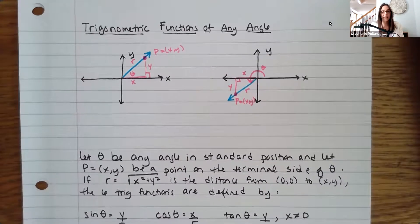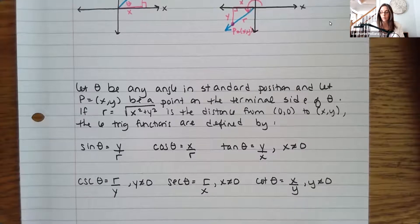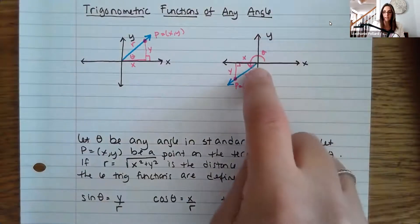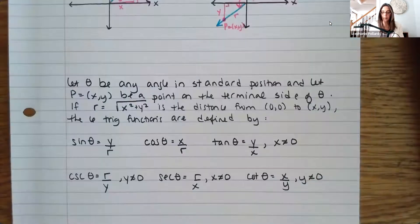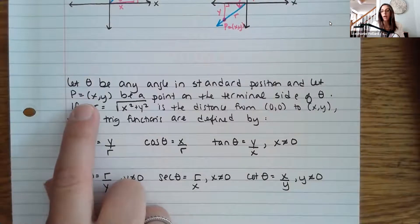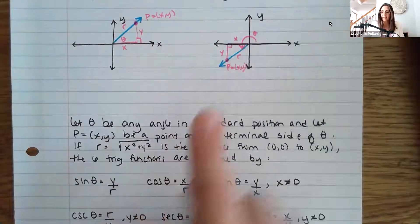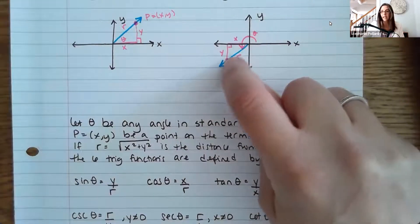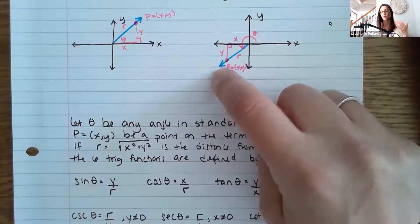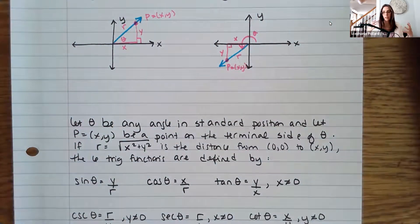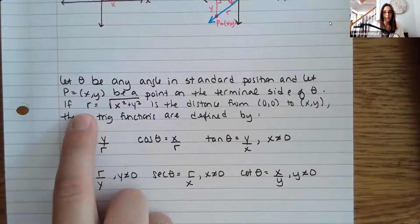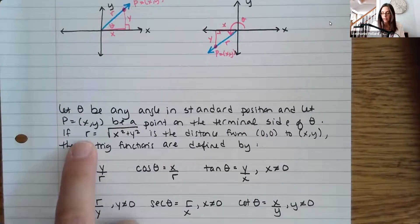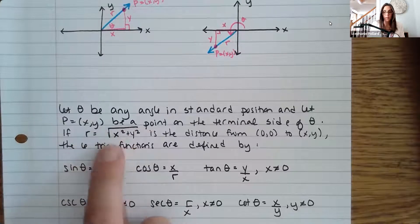Here's our definition. Let theta be any angle in standard position. Standard position means that you're centered at the origin, and your angle starts on the positive x-axis. Let P be a point (x, y) on the terminal side of theta — any point along that terminal side, it doesn't matter how far out it goes, because we're using ratios, so the length of that ray is really not important. We can find the radius by taking the square root of x squared plus y squared.